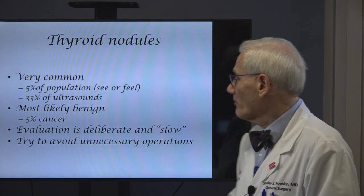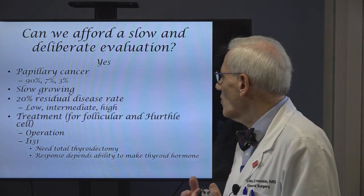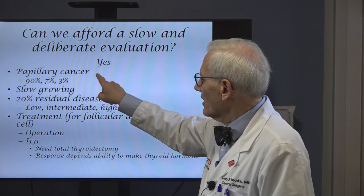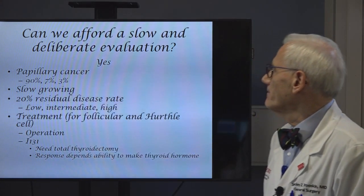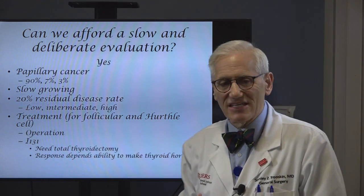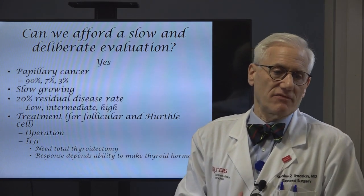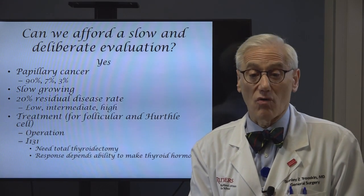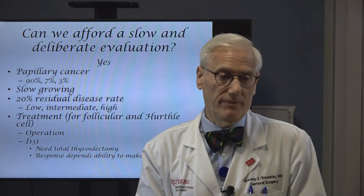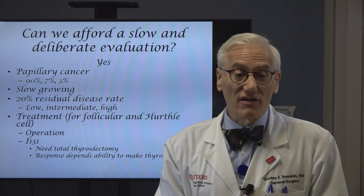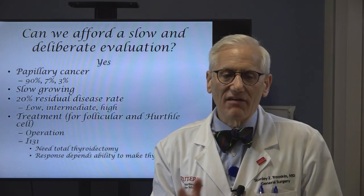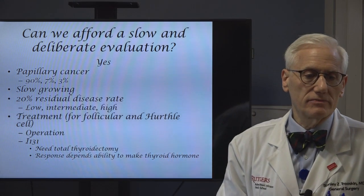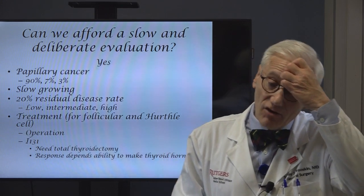So we do a very deliberate evaluation and we take our sweet time about it — all to avoid unnecessary operations. Can we afford the slow and deliberate evaluation? The answer is yes. Why? Because the most common type of thyroid cancer is called papillary thyroid cancer. 90% of people are cured, 7% live with it as a chronic disease. Why do we get such great results? First of all, it's slow growing. We're not conditioned to think about cancer being slow growing — we're conditioned to think 'I have cancer, this is going to kill me.' But not every cancer in reality grows rapidly. Some cancers grow very slowly. We call that the biology of the cancer.